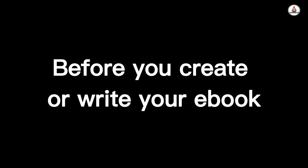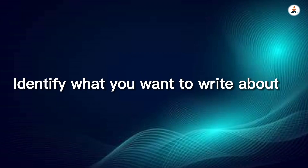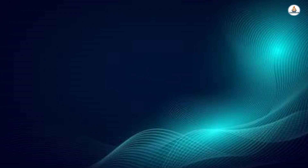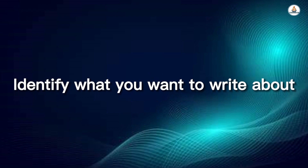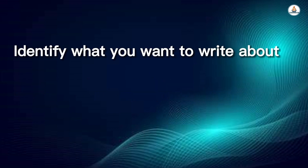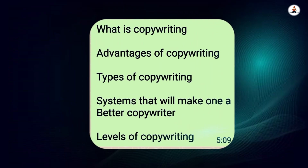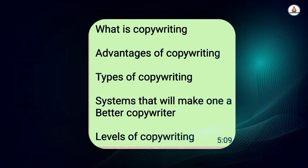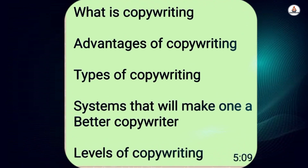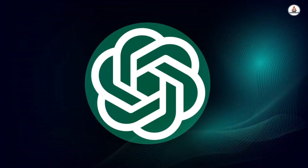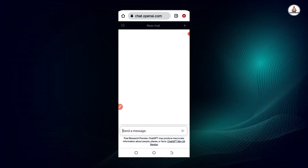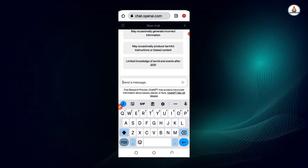Before you create or write your ebook, first of all you need to identify what you want to write about. Are you going to write about money, sales, or time? Once you identify your topic, get a notepad or any rough book and jot down what you want to write about. For example, I'm going to write about copywriting — what is copywriting, advantages of copywriting, types of copywriting, systems that will make one a better copywriter, and levels of copywriting. So first I'm going to launch ChatGPT and ask it what is copywriting.